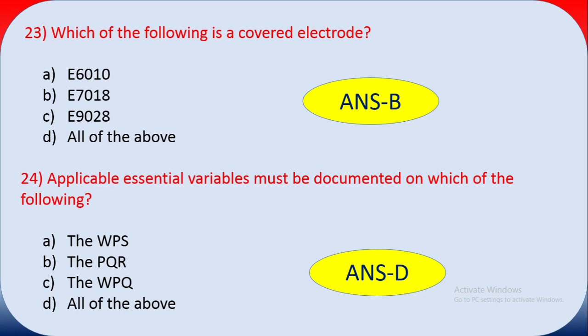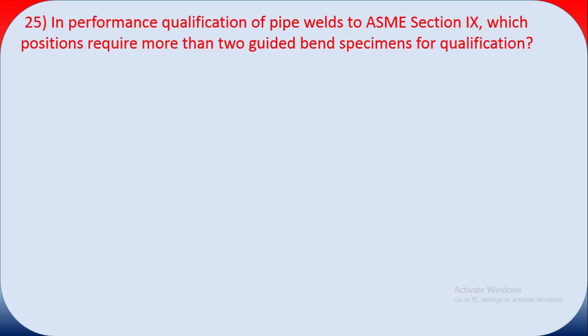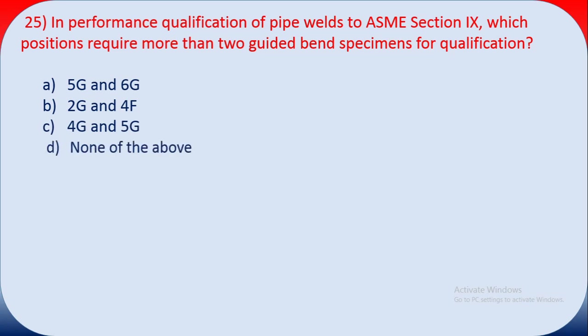Question twenty-five: in performance qualification per ASME Section 9, which positions require more than two guided bend tests for qualification? Options include 5G and 6G, 2G and 4F, 4G and 5G, and none of the above. In performance qualification, two guided bend tests are generally sufficient. The answer is D — none of the above.